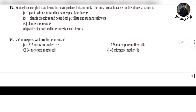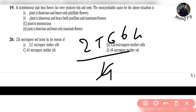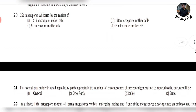Question 20: 256 microspores will be formed by the meiosis of how many microspore mother cells? Divide 256 by 4 — the answer is 64. Option C.